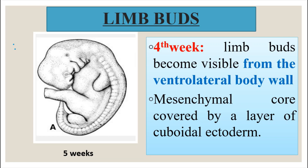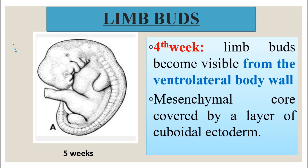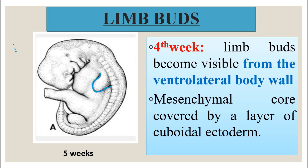The limbs will start developing in the fourth week of development. Limb buds will become visible from the ventral lateral body wall. These limb buds will have a mesenchymal core which is made by the lateral somatic mesoderm and it is covered by a layer of cuboidal ectoderm. This is the lateral portion of the developing fetus and the anterior part is where the buds come from. This bud here is the lower limb.